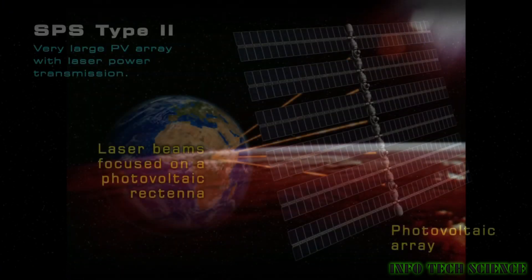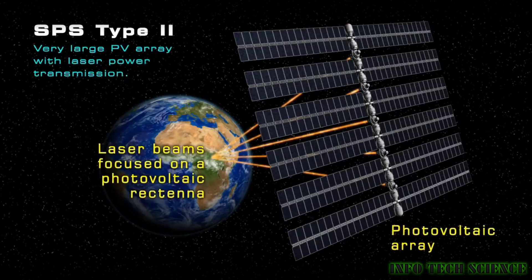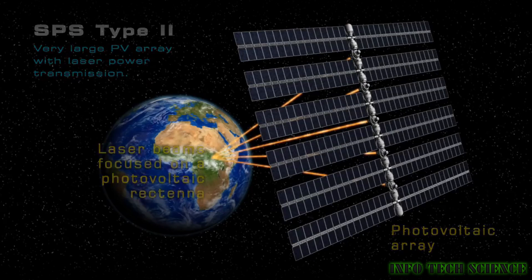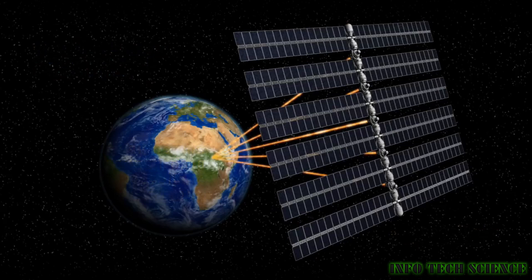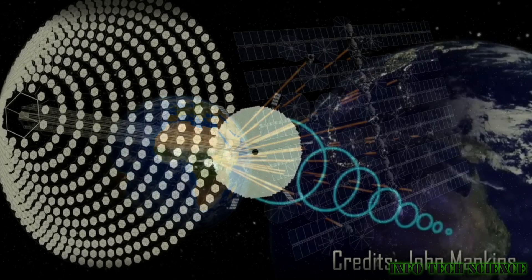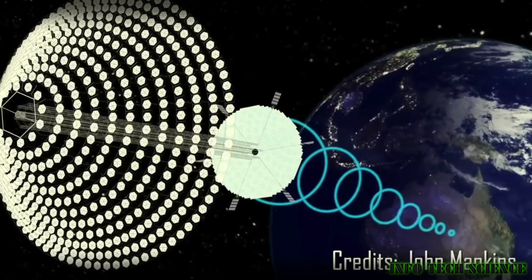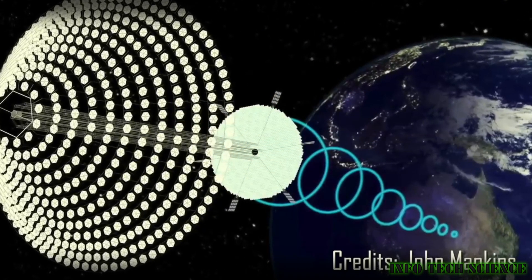Power transmission: efficient and safe methods for transmitting the generated power from space to Earth need to be developed. This involves technologies such as microwave or laser beams, which must be carefully designed to minimize energy loss and ensure the safety of receiving stations on Earth.